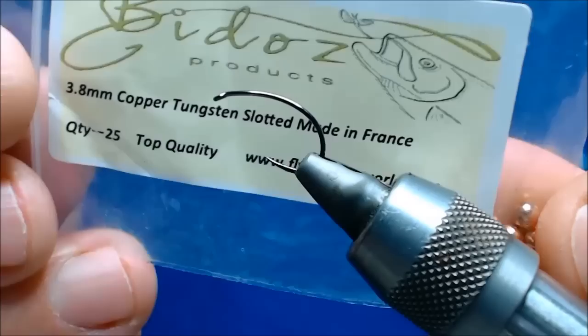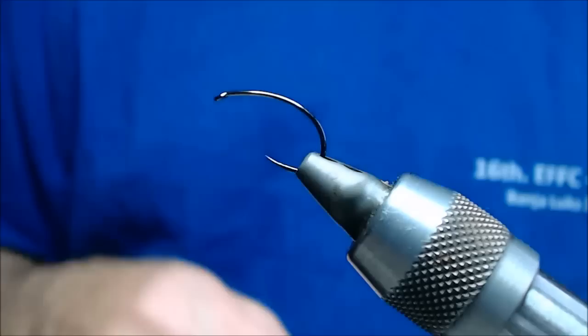Now the other thing I'm going to use here, it's quite a big hook and I want it to go down quite fast. 3.8mm copper tungsten beads, Bydos ones again. As it says, I only use what I think is the best.